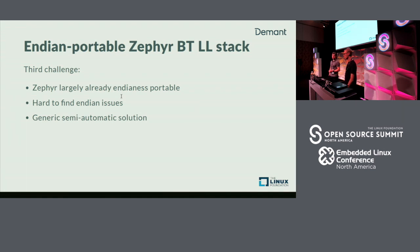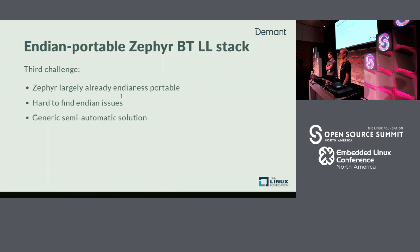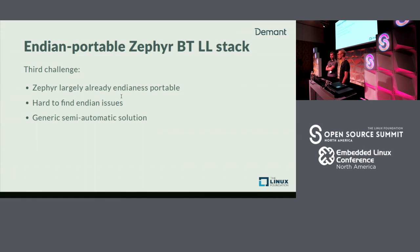That covers building — CMake and locating source code. A few changes were also needed to the Zephyr Bluetooth link layer stack. Fortunately, Zephyr was already pretty much endian-portable out of the box. However, not the Bluetooth link layer — we still had to find the endianness issues and correct those. We are big-endian. This time around we came up with a clever, generic, semi-automated way of doing that which is not Zephyr-specific, so other projects could use it.